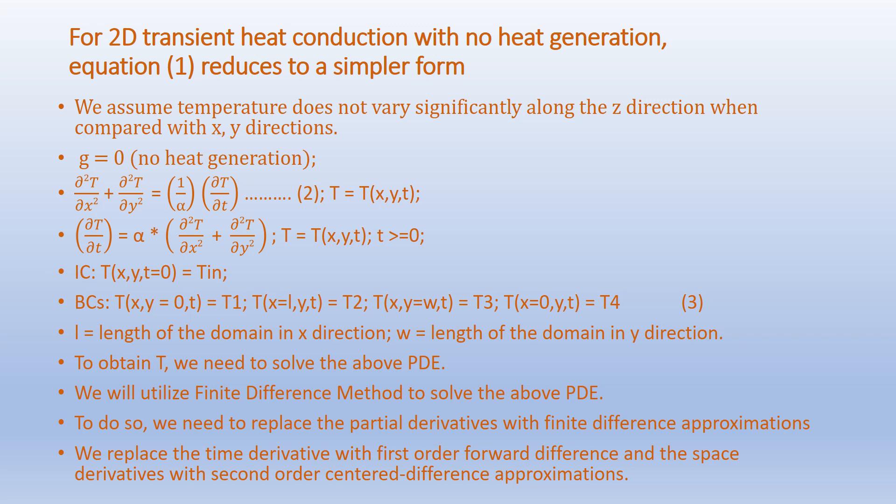T is a function of x, y, and t, where time t is greater than or equal to 0. To solve this partial differential equation we need one initial condition and four boundary conditions. The initial condition is T(x, y) at t=0 equals T₀. The boundary conditions are: T(x, 0, t) = T1, T(L, y, t) = T2, T(x, W, t) = T3, and T(0, y, t) = T4, where L is the length of the domain in the x-direction and W is the length in the y-direction.